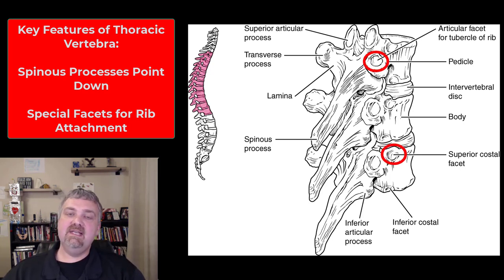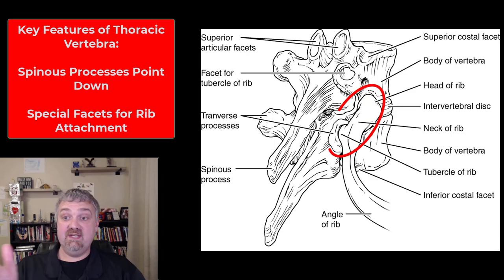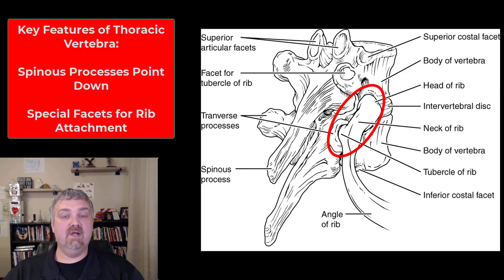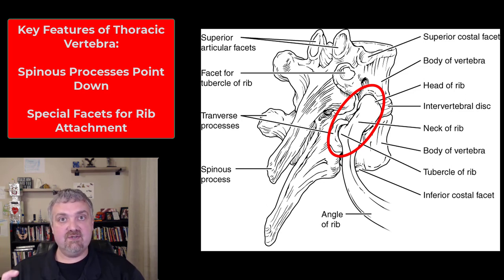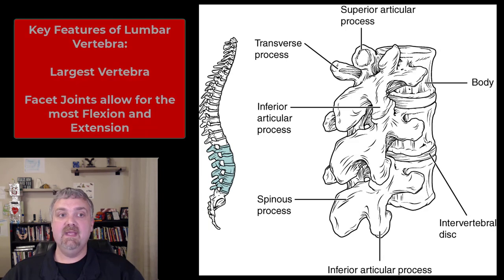The other interesting thing about thoracic vertebrae is they have extra facets on the side where your ribs attach. Here you can see a rib attached — there are two attachment points for each rib: one where the head attaches and one where the tubercle of the rib attaches. So they have these extra flat facet joints that allow your ribs to attach there. 12 pairs of ribs, 12 thoracic vertebrae.